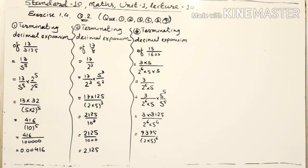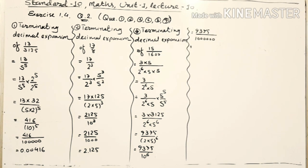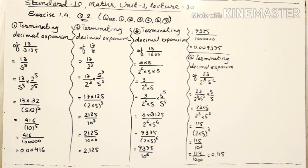Since 2 and 5 now have equal power, I can write them in one bracket: (2 into 5) raised to 6, giving 10 raised to 6. In the numerator I get 3 into 3125, which equals 9375. Since 10 raised to 6 means 6 zeros, after the decimal mark I must write 6 digits. I already have 4 digits (9375), so I add 2 zeros, giving the answer 0.009375.